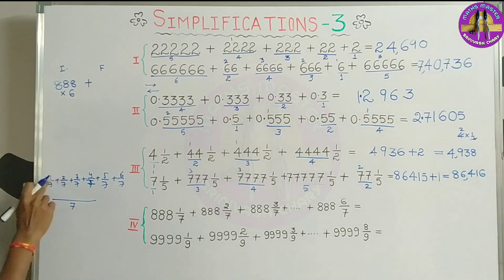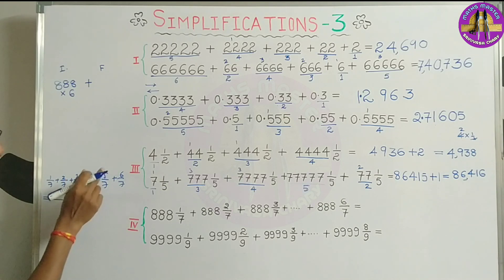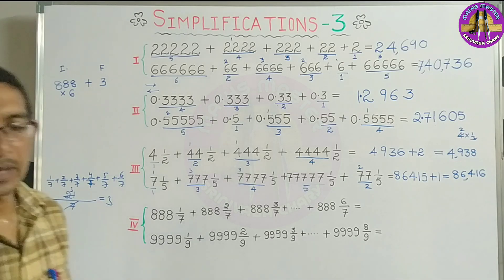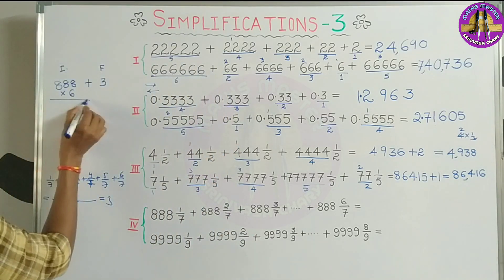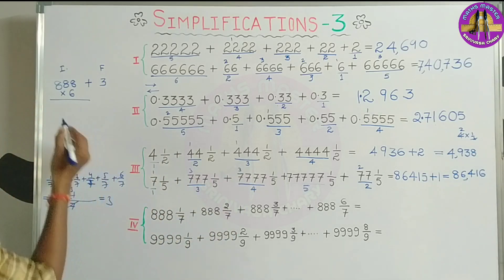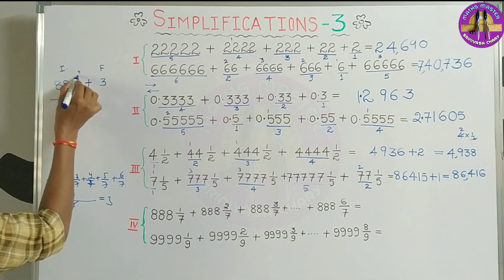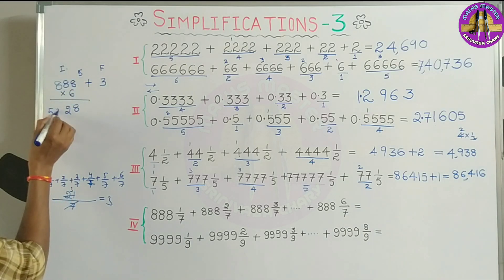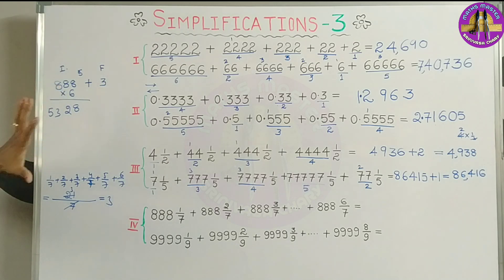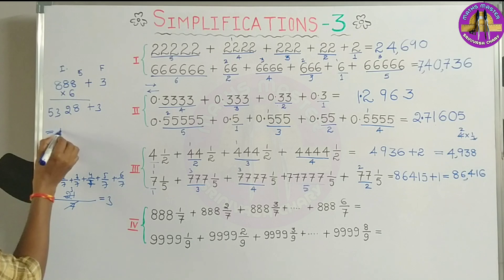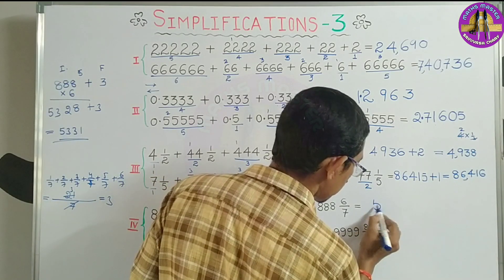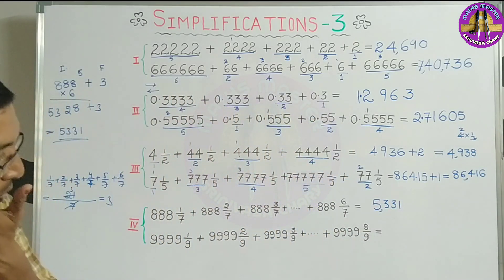Denominator is 7. The numerator sum: 1 plus 2 is 3, 3 plus 3 is 6, 6 plus 4 is 10, 10 plus 5 is 15, 15 plus 6 is 21. So 21 by 7 — the fraction part is 3. Now multiplying: 6 sixes are 48; 48 plus 4 is 52; 48 plus 5 is 53. Working through: 5, 3, 3, 1; 8 plus 3 is 11. So the answer for this question is 5,331.